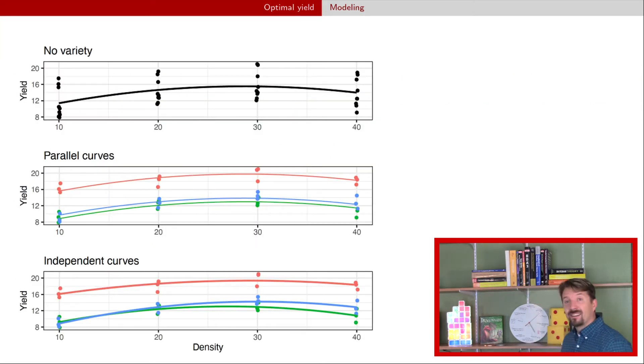If we just plot these different models this is the depiction of those models. That first plot shows you a situation where you have no effect of variety whatsoever. I've turned all the points black to indicate that we're treating them equally because there's no variety in the model, probably not reasonable for what we've seen with these data.